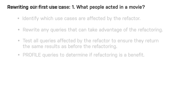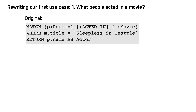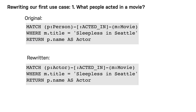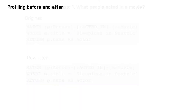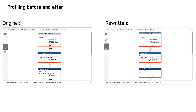Here is our first use case that is affected by the addition of the actor label to the graph. Our original query specifies the person label, and we rewrite the query to use the actor label. If we profile the query before the refactoring, we would have seen in our graph that it retrieves five nodes or rows in the first step. Using the rewritten query on our refactored graph, we see that fewer nodes or rows are returned in the first step.